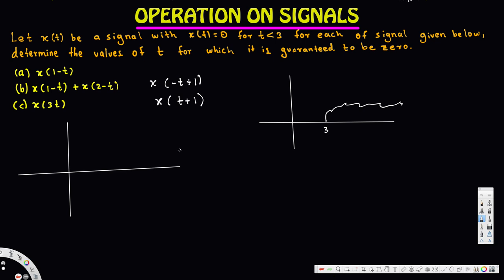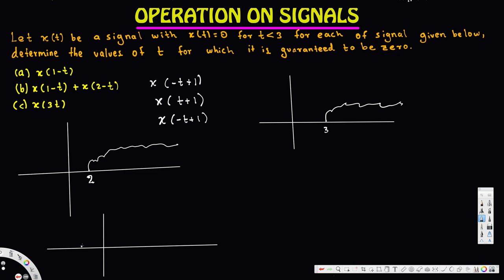x(t+1) means t minus (-1), so this is shifted one unit to the left. Before it was at 3, now it's at 2. When we put x(-t+1), that equals x(1-t). Negative t plus 1 means a reversal — like rotating around the y-axis. So the reversed graph starts from negative 2 and goes to negative infinity. After t = -2 it's going to be 0, so when t is greater than -2, x(1-t) is guaranteed to be 0.